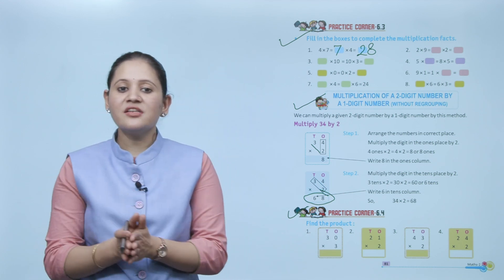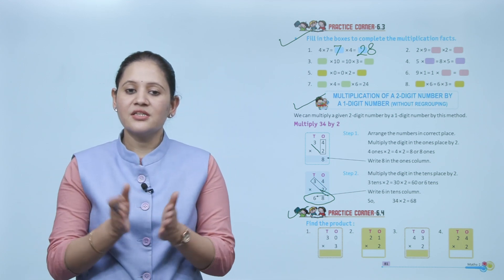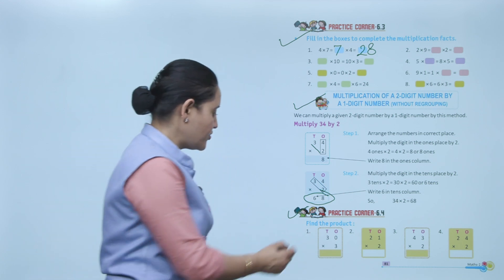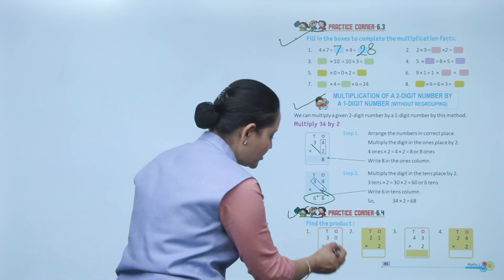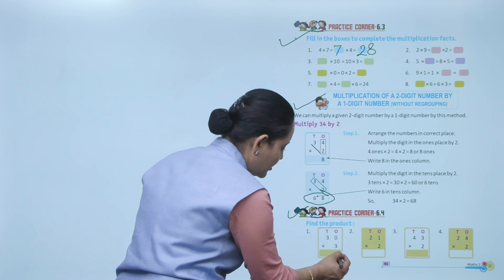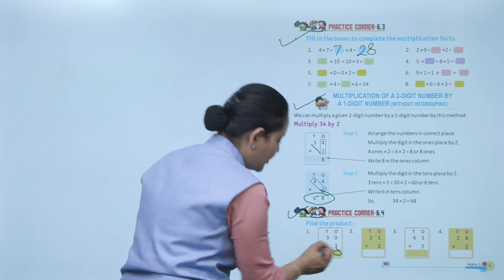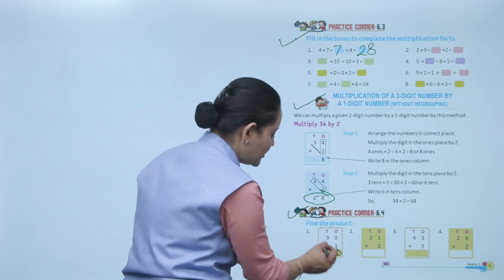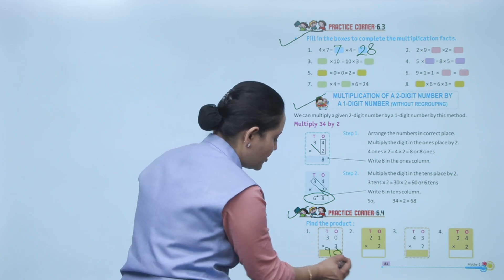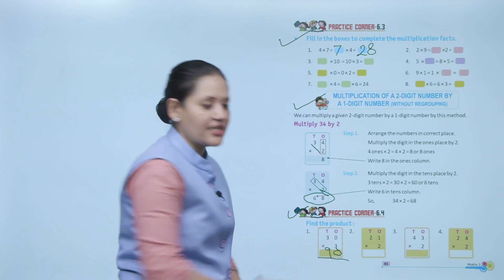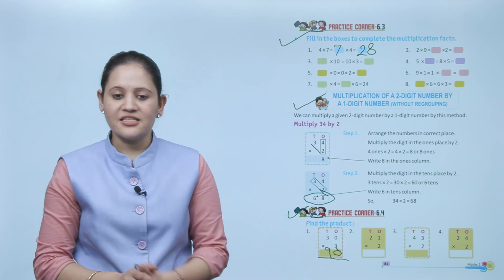Practice Corner 6.4: Find the product. 30 multiplied by 3 — first, 3 into 0 equals 0; then 3×3 equals 9 — so the product is 90.